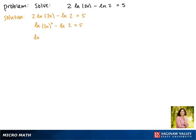2x squared is 4x squared, so we have the natural log of 4x squared minus the natural log of 2 equals 5. When we have two natural logs with the same base being subtracted, this means that their arguments, or what's inside, can be divided. So this gives us the natural log of 2x squared equals 5.